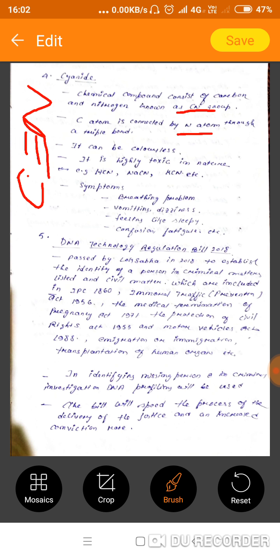It can be colorless. It is highly toxic in nature. For example, HCN hydrogen cyanide, NaCN sodium cyanide, KCN potassium cyanide, etc. Let's see what are the symptoms of getting in contact with such a hazardous compound: breathing problems, vomiting, dizziness, feeling sleepy, confusion, fatigue, etc. This compound can also trigger heart attack.